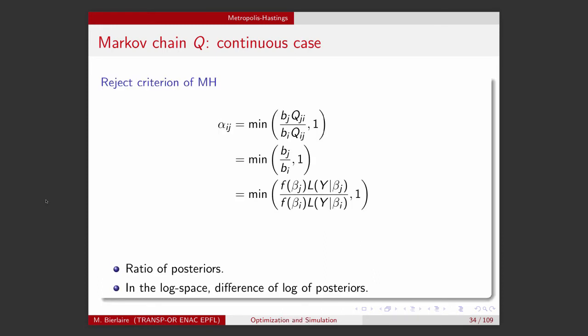Since the transition probability of the process is a symmetric matrix, the q's cancel out — this is the Metropolis version. So alpha is the minimum between the ratio of the target distributions and 1. The target distribution is the posterior, which is the product of the prior and the likelihood. At the numerator we have this for beta_j, the candidate; at the denominator, beta_i, the current state. Again, we work in the log space to address the numerical issues.